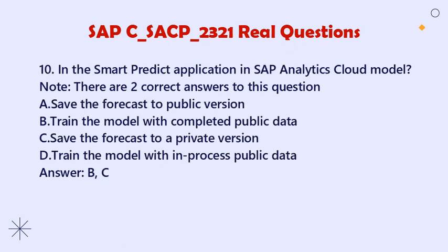Question 10: In the Smart Predict application in SAP Analytics Cloud Model, there are two correct answers. A. Save the forecast to a private version. B. Train the model with completed public data. C. Save the forecast to a private version. D. Train the model with in-process public data. Answer: B, C.